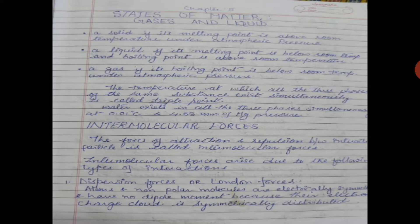A substance is said to be solid if its melting point is above room temperature under atmospheric conditions. A substance is liquid if its melting point is below room temperature and boiling point is above room temperature. Any substance is a gas if its boiling point is below room temperature under atmospheric conditions. A given substance may also exist simultaneously in all three states under certain specific conditions of temperature and pressure — that condition is known as the triple point.